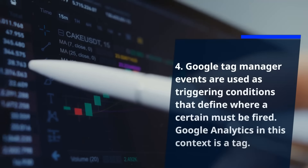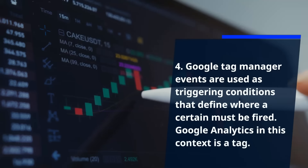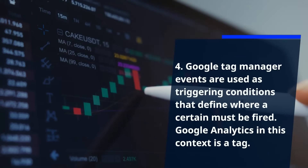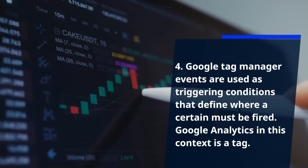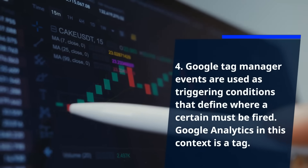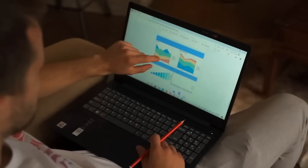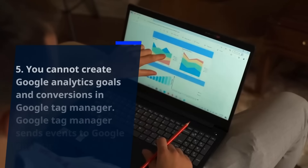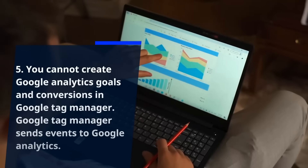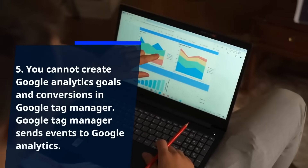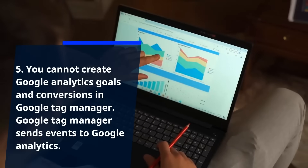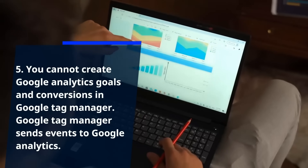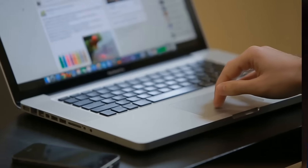Fourth, Google Tag Manager events are used as triggering conditions that define where a certain tag must be fired — Google Analytics in this context is a tag. Fifth, you cannot create Google Analytics goals and conversions in Google Tag Manager; Google Tag Manager sends events to Google Analytics.